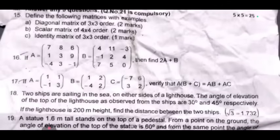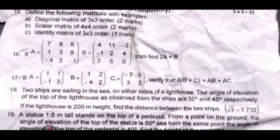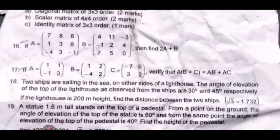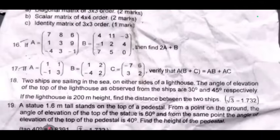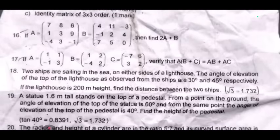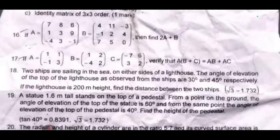Question 18: Two ships are sailing in the sea on either side of a lighthouse. The angles of elevation of the top of the lighthouse observed from the ships are 30 degrees and 45 degrees respectively. If the lighthouse is 200 meters high, find the distance between the two ships.